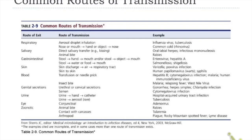Salivary droplets are another route — direct salivary transfer by kissing can spread oral herpes and infectious mononucleosis, also known as the kissing disease. Animal bites are another salivary route. Blood transfusion or needle sharing: the diseases screened for in blood transfusion include HIV, malaria, Hepatitis B, Hepatitis C, and syphilis. You must be free from those diseases to donate blood.